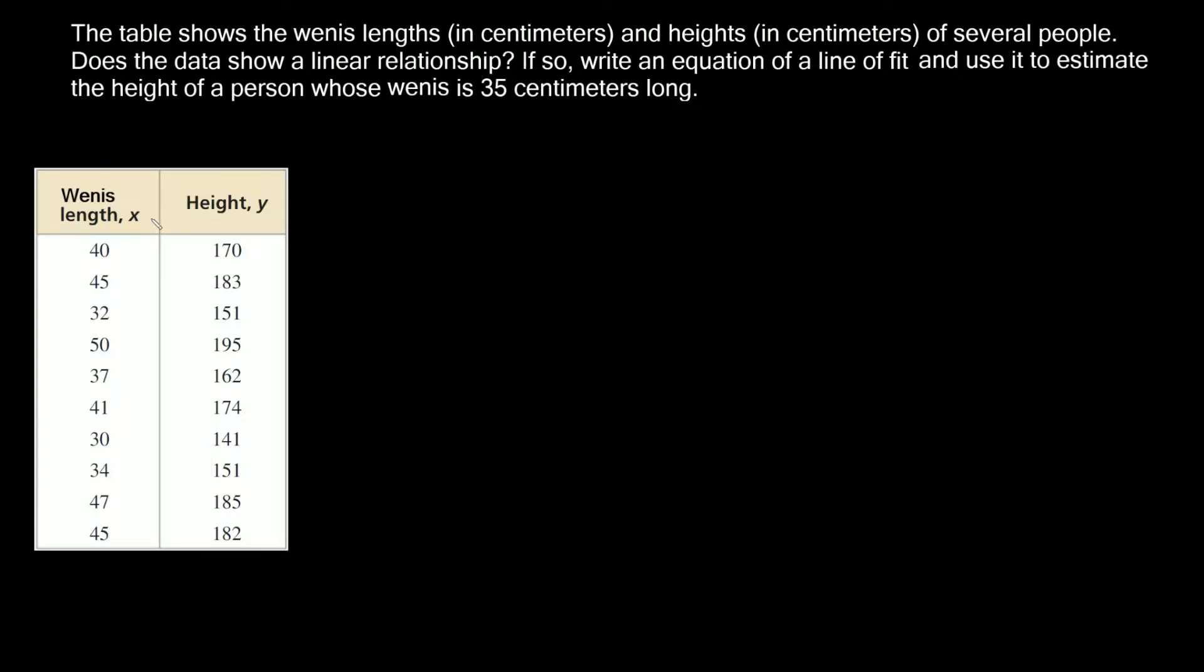The table shows us the wenus lengths in centimeters and heights in centimeters of several people. Does the data show a linear relationship? So here in the x column we have wenus lengths and in the y we have height. Just to clarify, a wenus is an elbow, or more specifically it's the skin on your elbow.